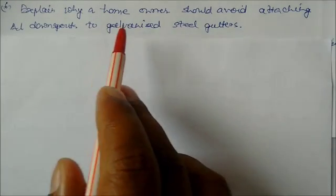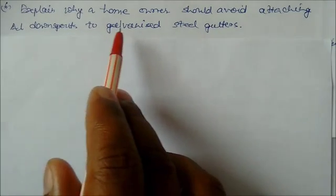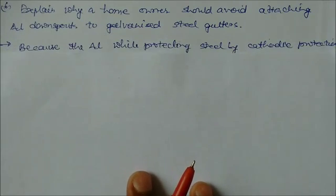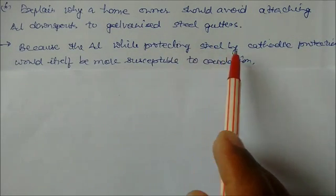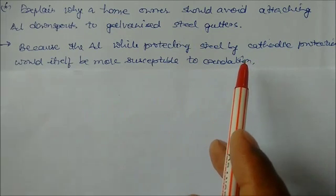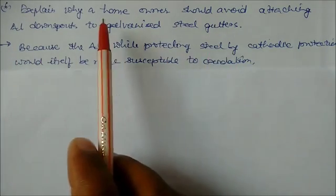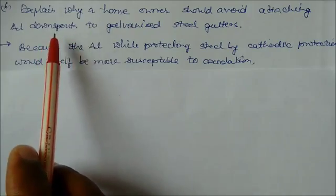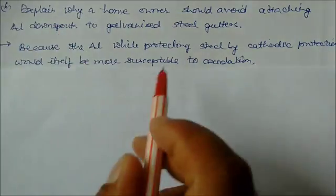Explain why a homeowner should avoid attaching aluminum downspouts to galvanized steel gutters. Anhydrous AlCl3 reacts with moisture in the air.